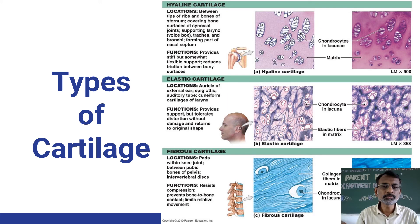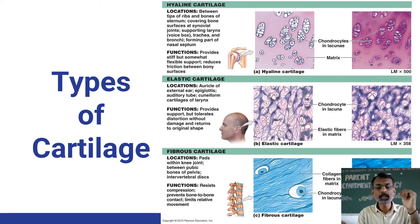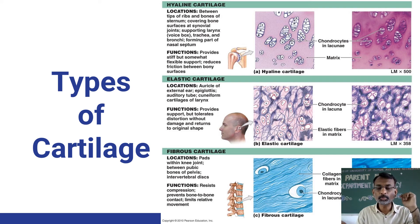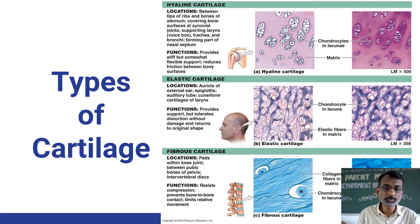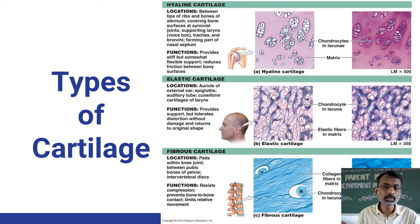Hyaline cartilage is present covering bone surfaces at synovial joints — between two long bones at their tips where the joint is present. It is also present supporting the larynx, which is the voice box. Hyaline cartilage is also present in the trachea, in the bronchi, and in part of the nasal septum.